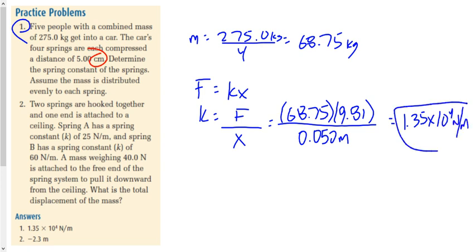There are a couple of valid approaches: you could use the full 275 kilograms divided by 0.05 and then divide the spring constant by 4, or multiply the distance by 4 with the full mass. Either way, you need to recognize you have information about four springs and need to convert to one spring.